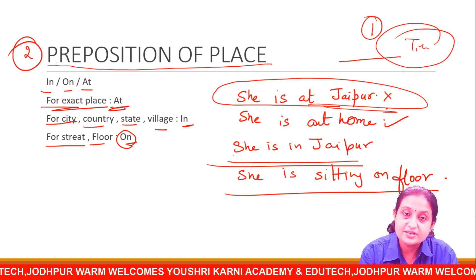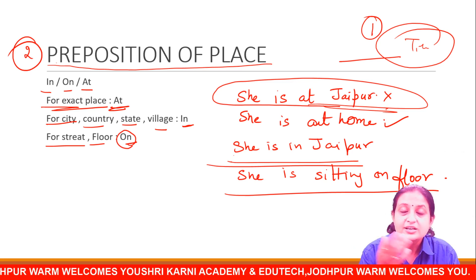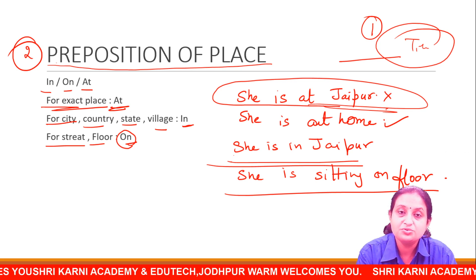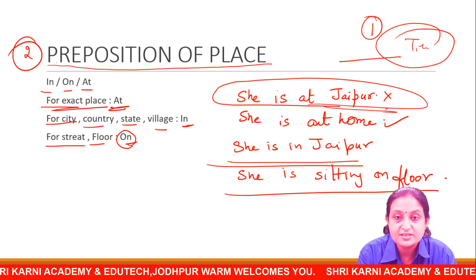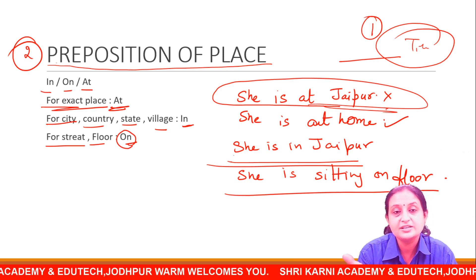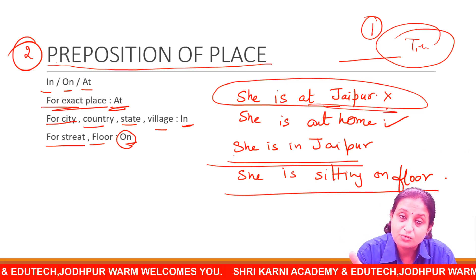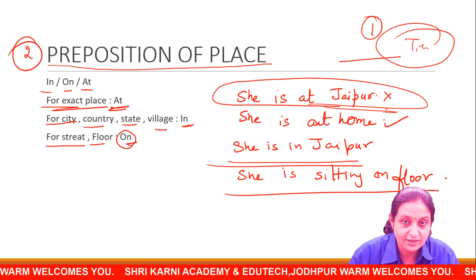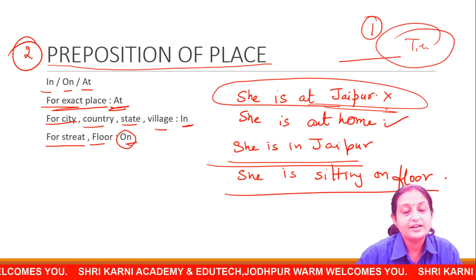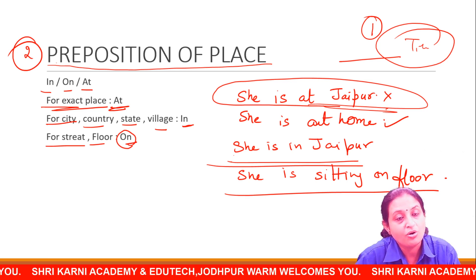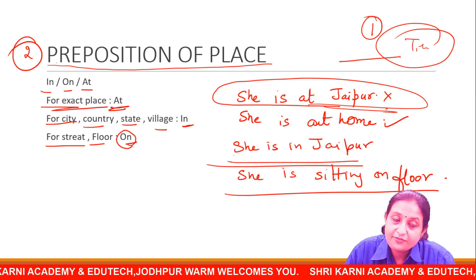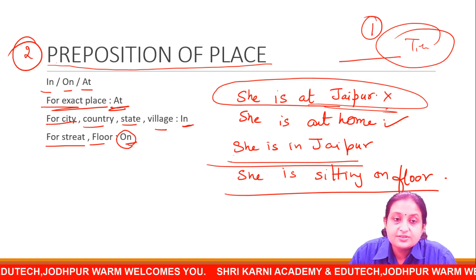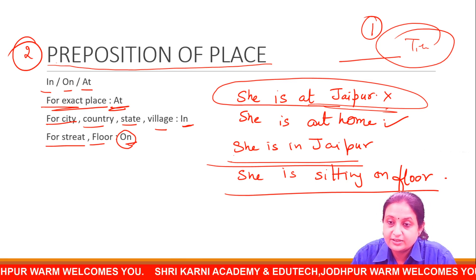यह कोई अभी 10th class नहीं है — लेकिन क्यों मैं basic ले रही हूँ? जिससे कि 8th class का बच्चा, 9th class का बच्चा भी basic concepts में आ जाए, तो उसका vocabulary section improve हो जाएगा. जब तक आप पढ़ रहे हैं और बाद में बोलेंगे, तो obviously you are sharp for that particular language. तो that is preposition of place — in, on, at. In for city/country/state/village, at for exact place, on for street or floor — clear.